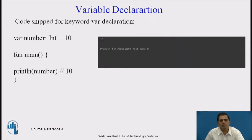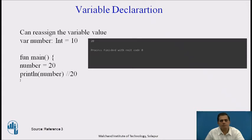Now we will see variable declaration using the var keyword. Here we write var number: Int = 10. So 10 is assigned to the number variable of type integer. In the main function, println(number) shows output 10. If I then change the value: number = 20, the output will display 20. Var allows you to modify the value, but val cannot modify the value. Remember this difference.